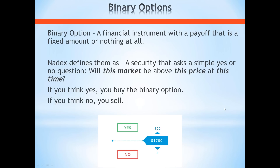A good number of you are saying you have an account but haven't made a trade yet — so maybe you're a little apprehensive about pulling the trigger. A binary option is a financial instrument with a payoff that is a fixed amount or nothing at all. This is why it's called a binary option — there are two outcomes on expiration: settling at a fixed amount or zero. For Nadex, that fixed amount is $100, and zero is always zero.